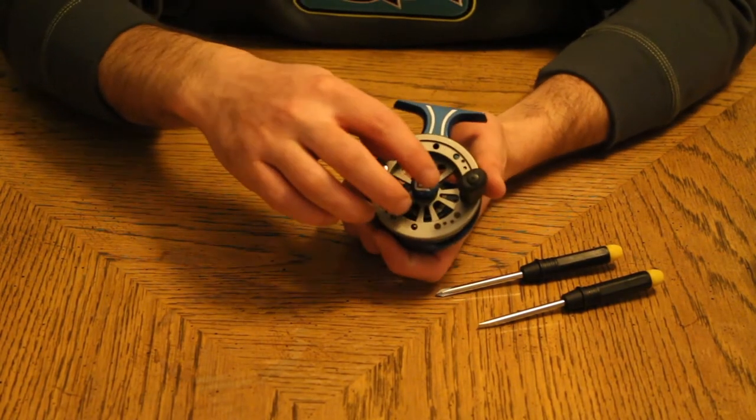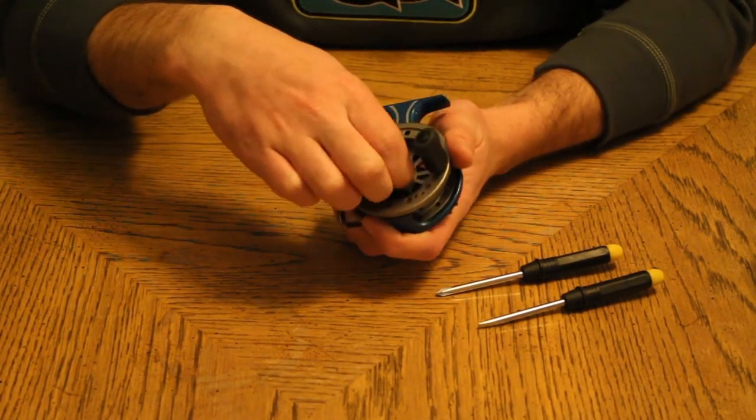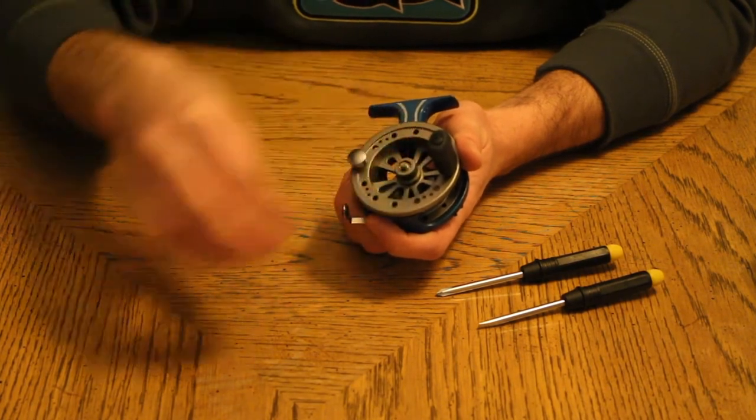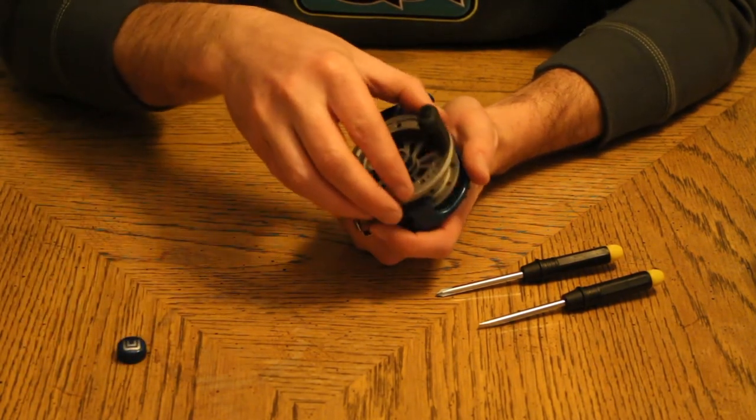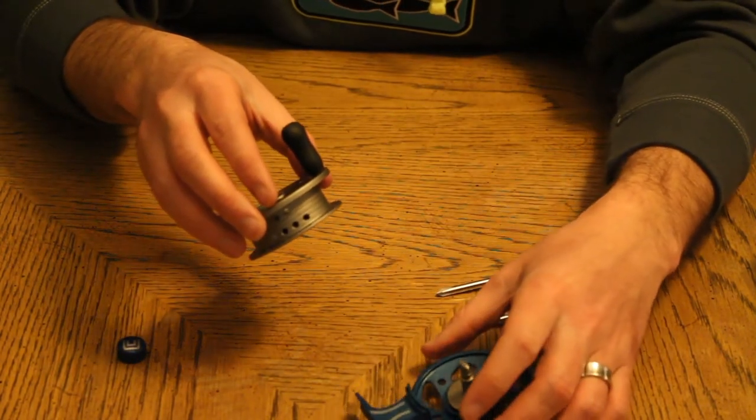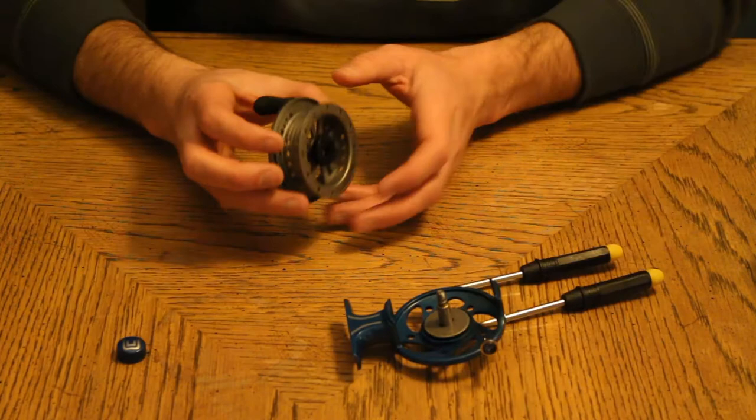You got your reel right here. You see the blue knob on the inside next to the handle of the reel. You unscrew that, set that aside. And that allows you to take the spool off of the frame of the reel. Set the frame off to the side, we'll use that later.